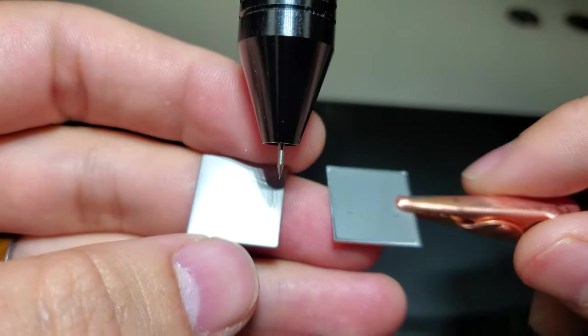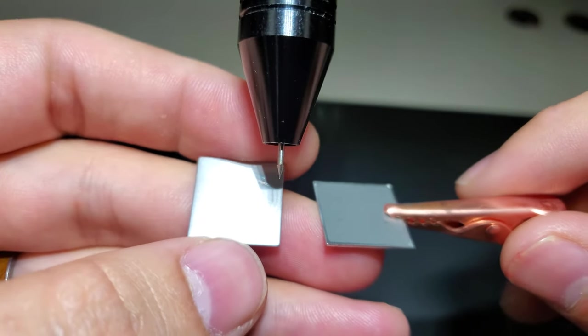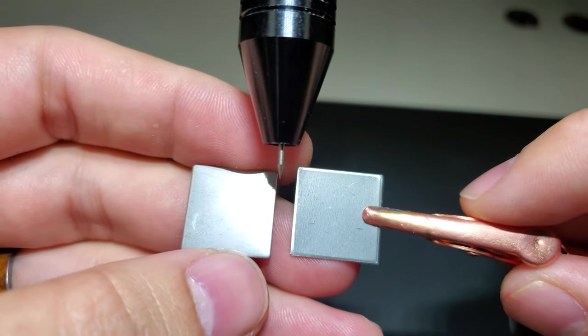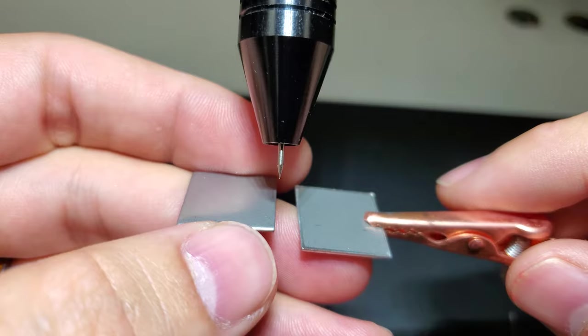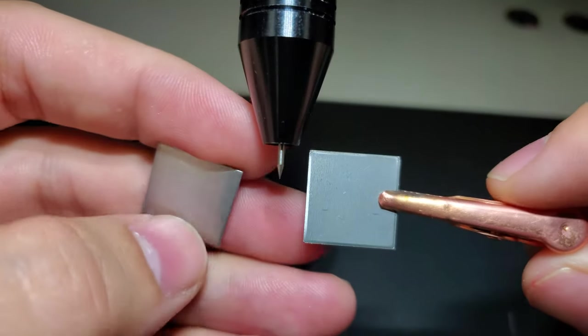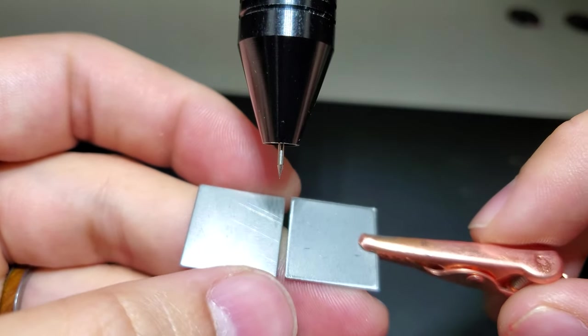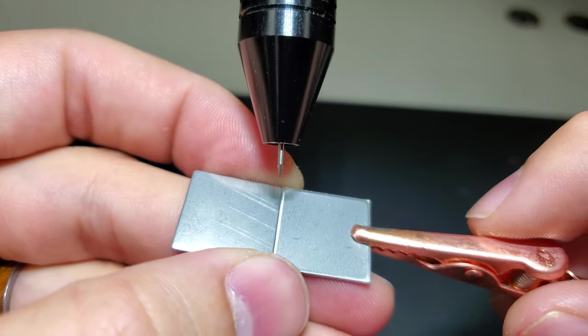We're going to be working on a 150S, though these techniques I'm going to be showing you are going to apply to all the PulseArc machines. So we just have some stainless steel tabs here and we're going to do a seam right down the middle.